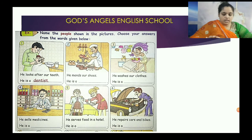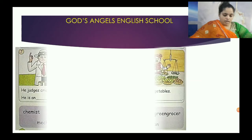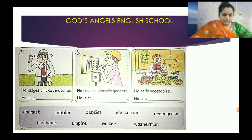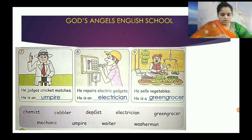He mends our shoes — he is a cobbler. He washes our clothes — he is a washerman. He sells medicine — he is a chemist. He serves food in a hotel — he is a waiter. He repairs cars and bikes — he is a mechanic. He judges cricket matches — he is an umpire. He repairs electric gadgets — he is an electrician. He sells vegetables — he is a green grocer.